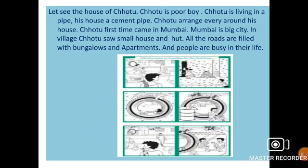Let's see the house of Chotu. Chotu is a poor boy. Chotu is living in a pipe — his house is a cement pipe. Chotu arranged everything around his house. Chotu first came to Mumbai, which is a big city.